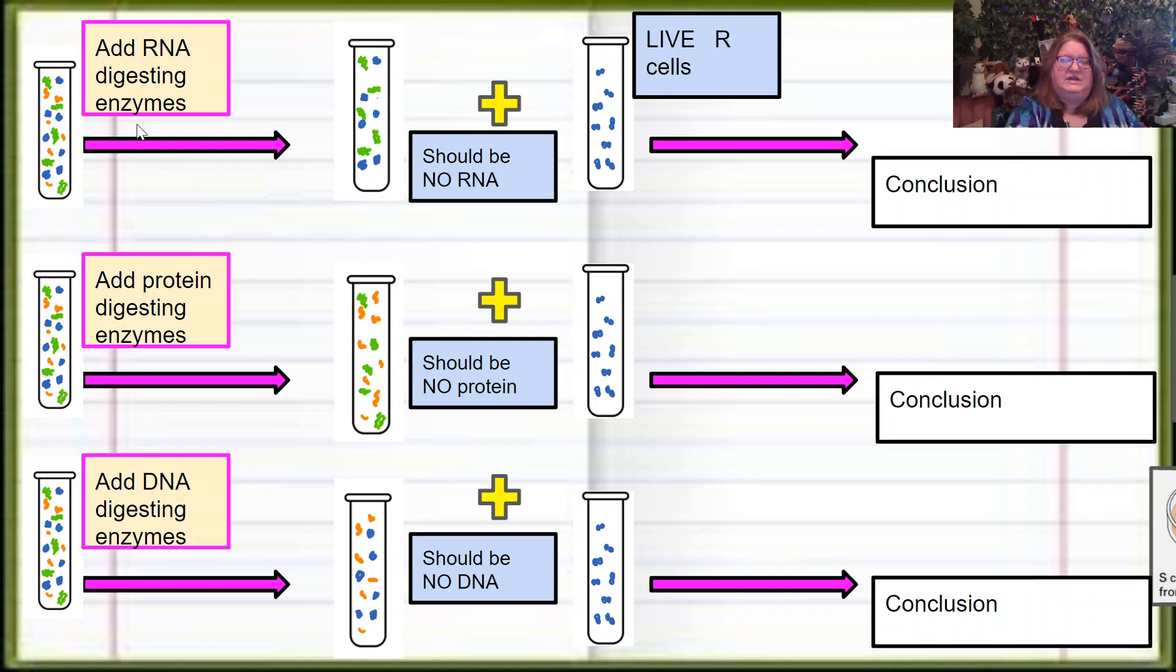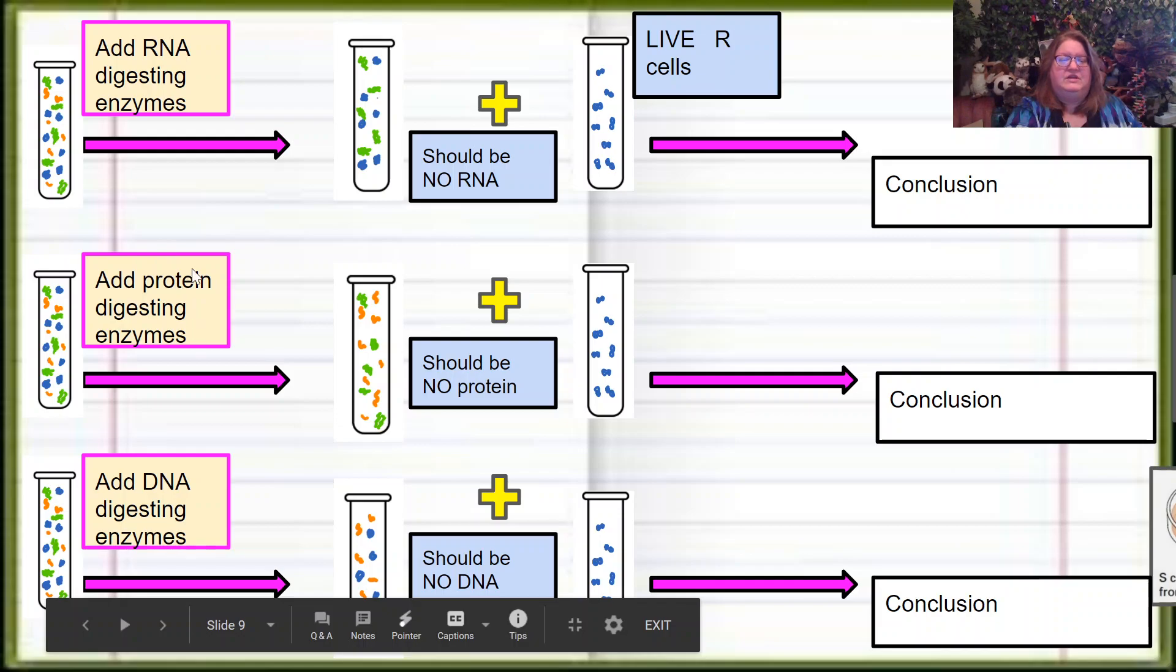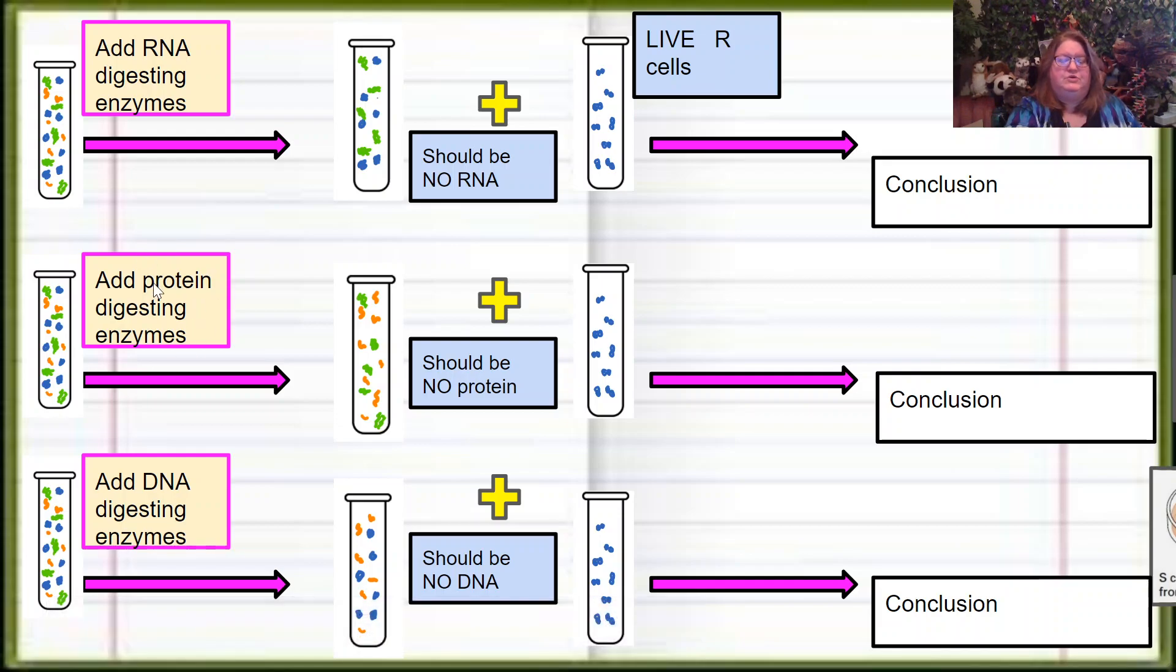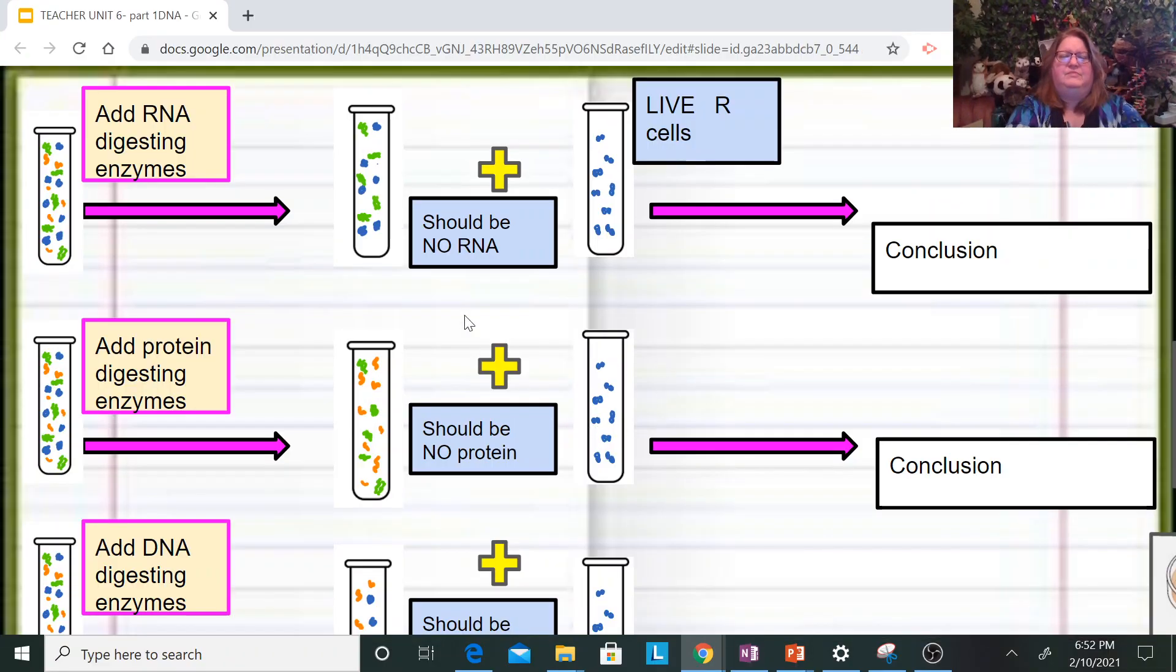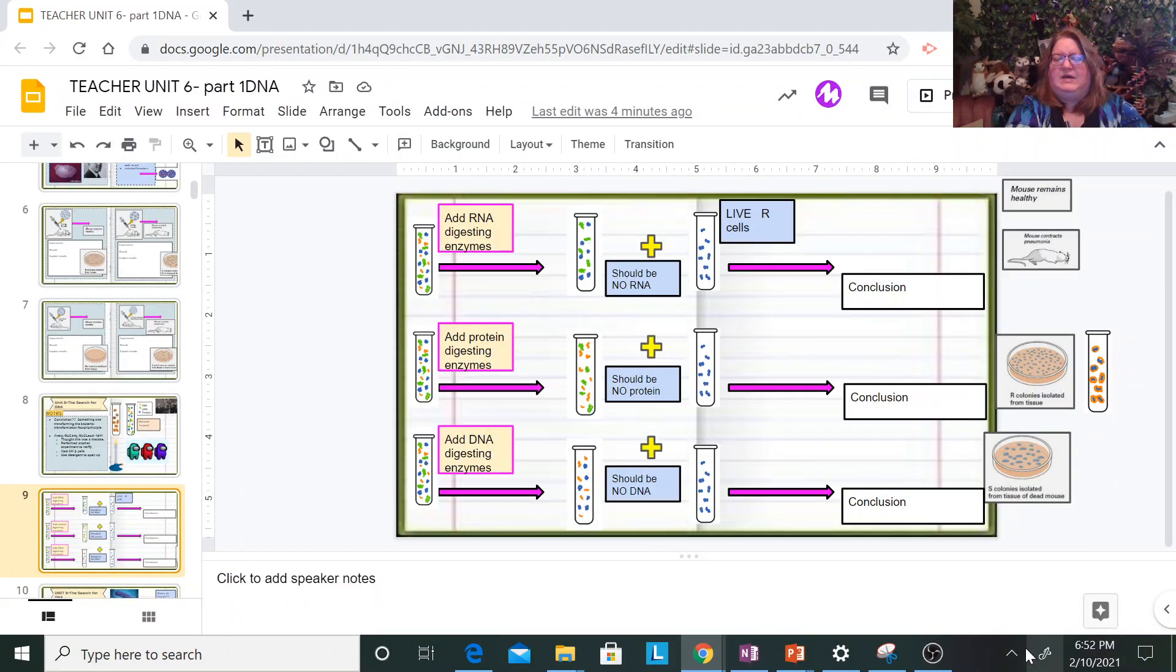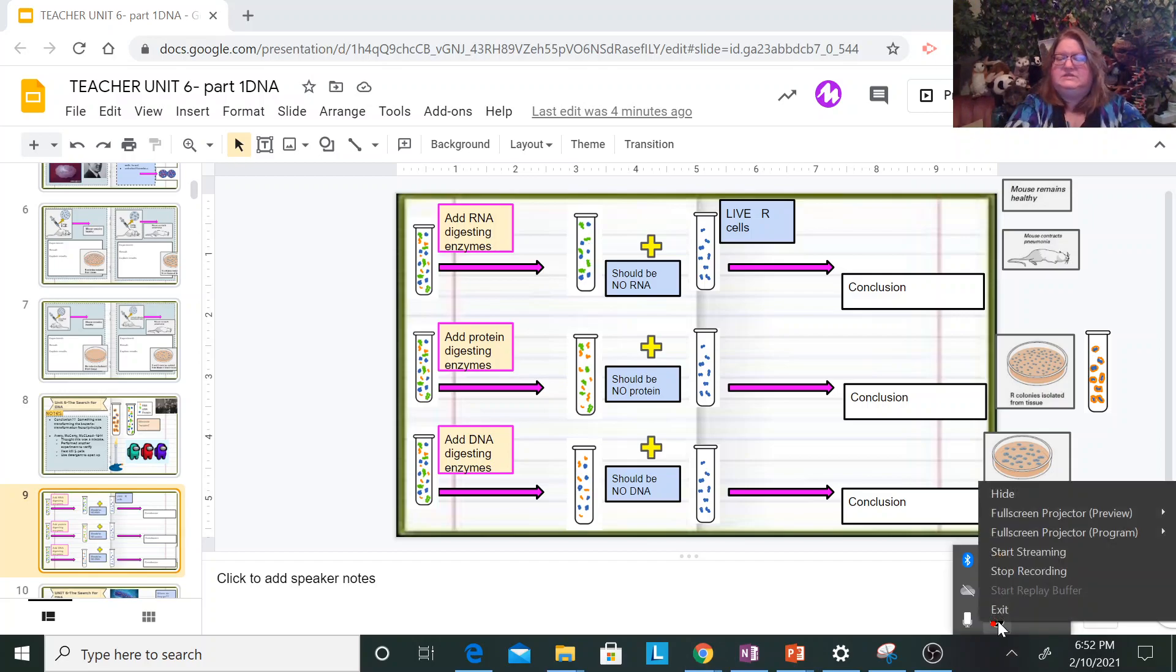They added RNA digesting enzymes, and the enzymes broke down the RNA, and there should be no RNA. They broke down the protein in another assay, they used protein digesting enzymes, which breaks down, notice the proteins are gone, and so there should be no protein. And then we have our DNA digesting enzymes, and notice there's no green DNA. I'm going to let you postulate some things, what do you think is going to happen, and we're going to answer this in our next video.